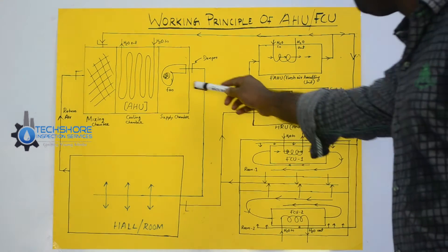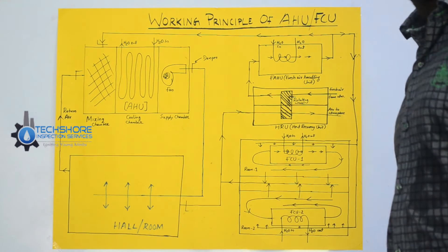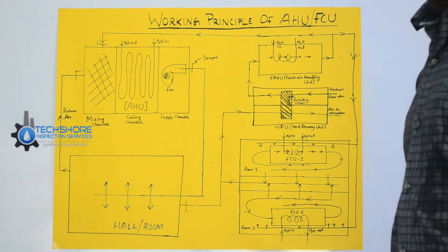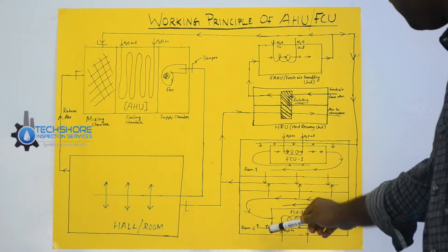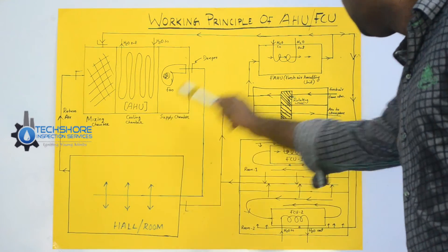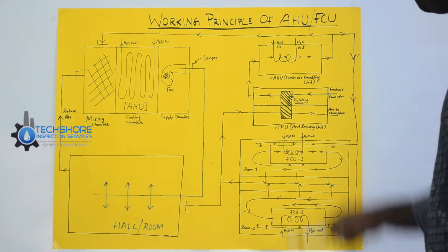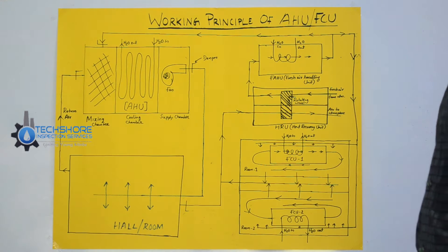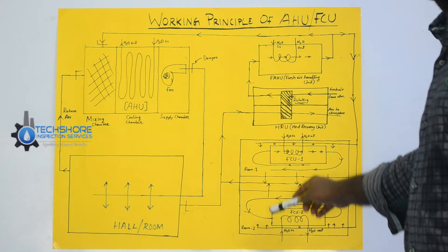Because this AHU has more capacity than FCU. FCU is generally put inside the room. That is why this is the room one, room two. This is the heart. You can see this here. It is the different types of rooms.